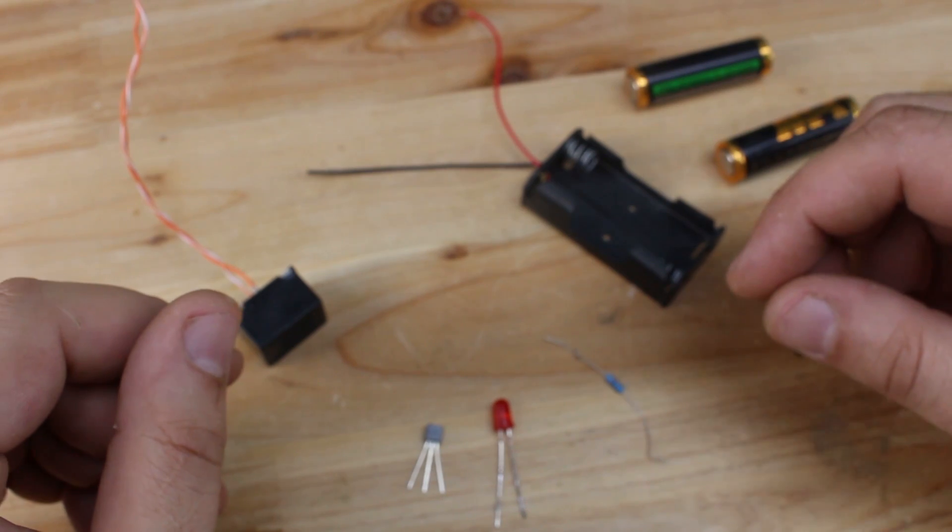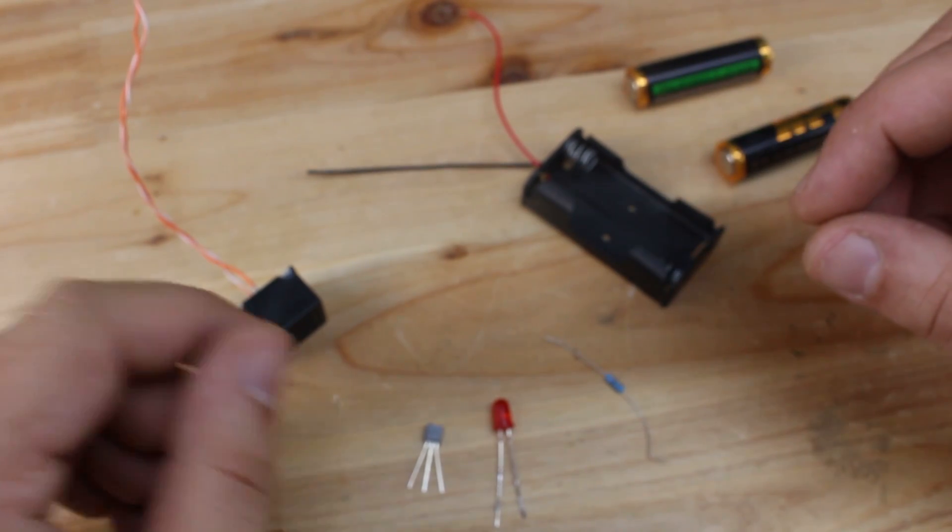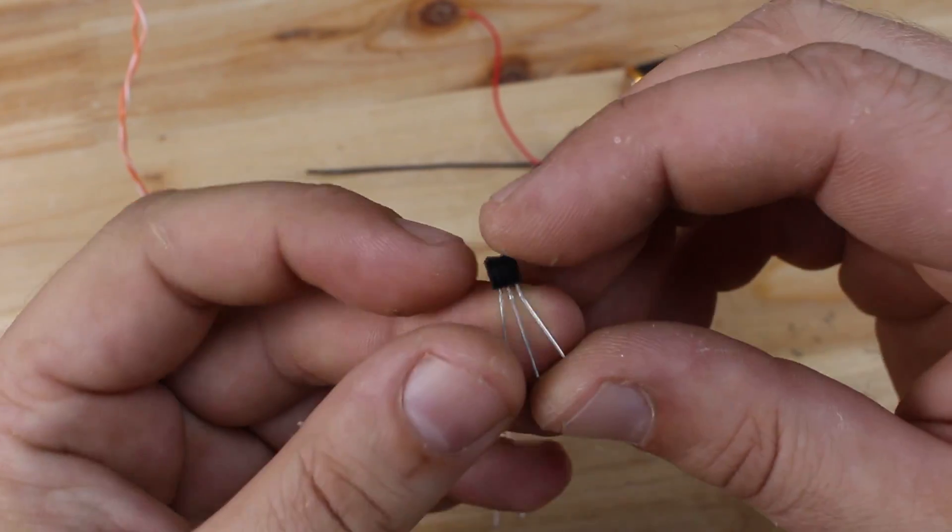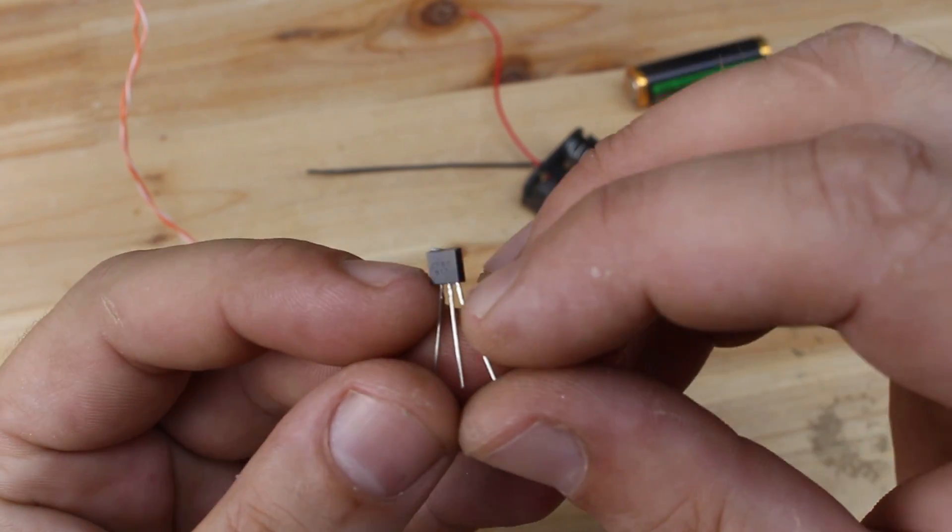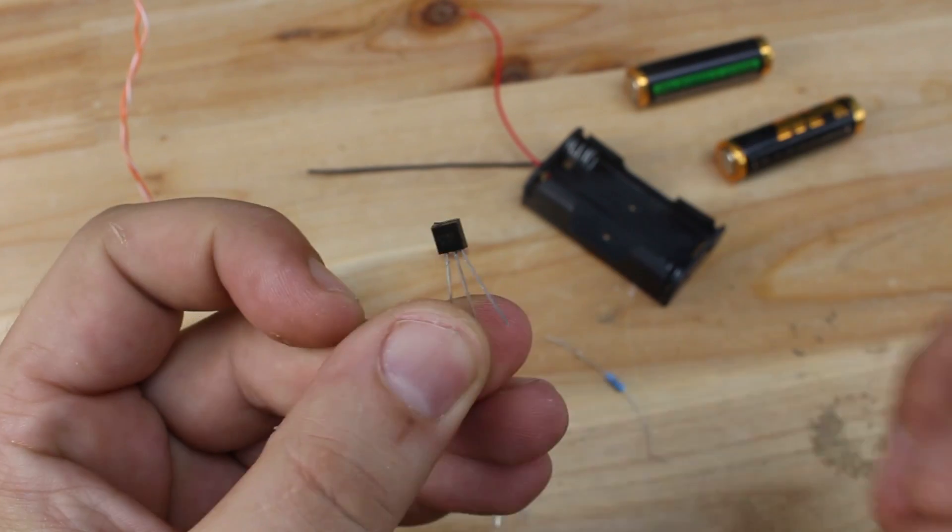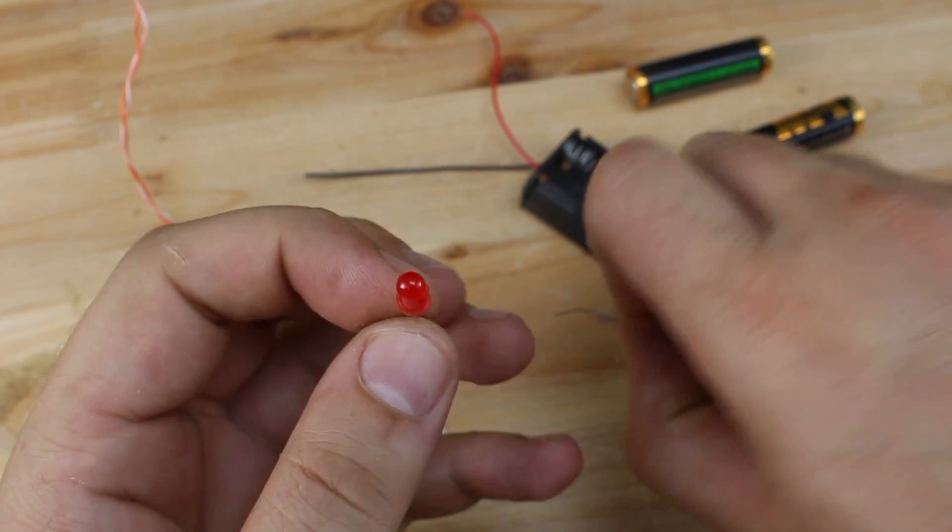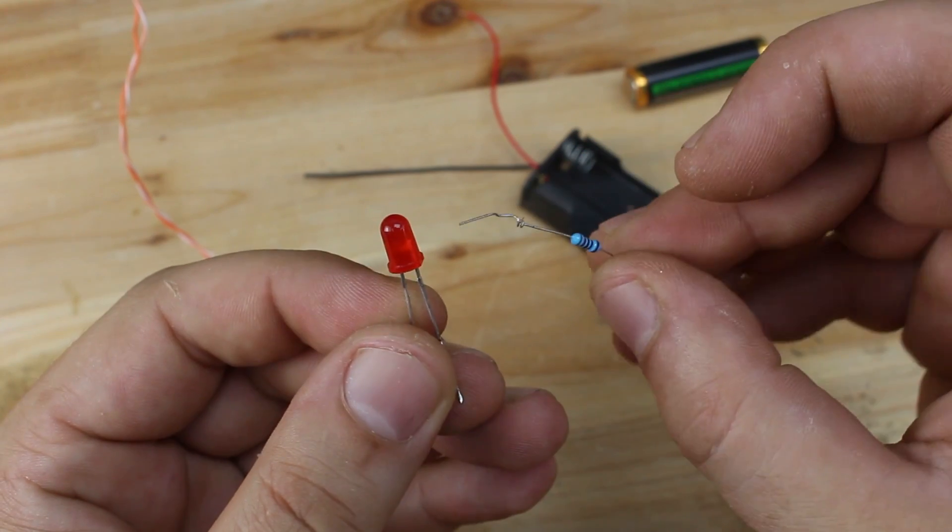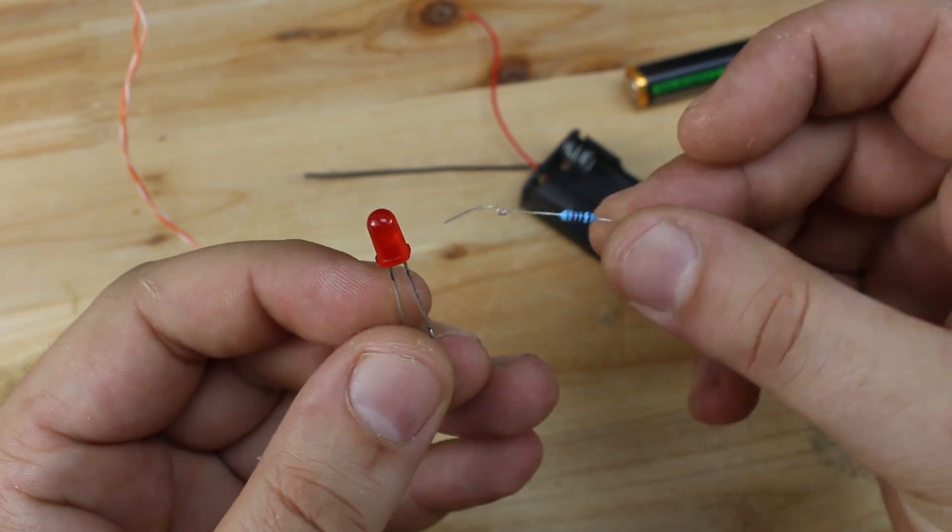For making the rain sensor you will need electronic parts like this transistor, Darlington N-P-N transistor BC517, ordinary LED and a resistor 10 kilohm.